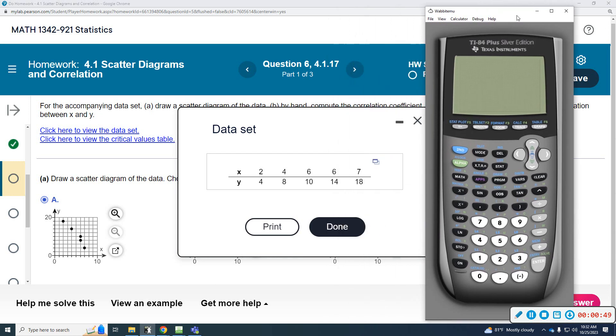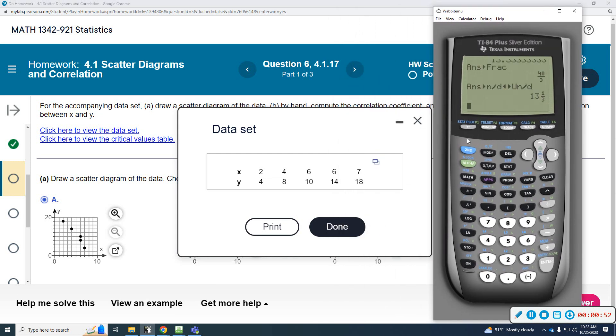So I'll pull up the data set. I'm going to turn this on, and I'm going to go to stat edit. I'm going to hit enter on edit. I'm going to put the X coordinate in L1 and the Y coordinate in L2. L2: 4, 8, 10, 14, 18.